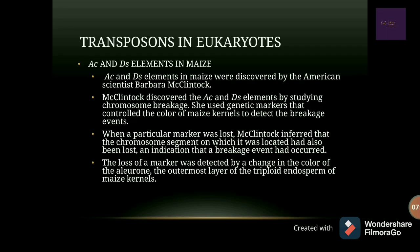Transposons in eukaryotes — example: AC/DS elements in maize. The AC and DS elements in maize were discovered by the American scientist Barbara McClintock. She discovered AC and DS elements by studying chromosome breakage, using genetic markers that controlled the color of maize kernels to detect breakage events. When a particular marker was lost, McClintock concluded that the chromosome segment on which the marker was located had also been lost, indicating that a breakage event had occurred. The loss of a marker was detected by a change in color of the aleurone.